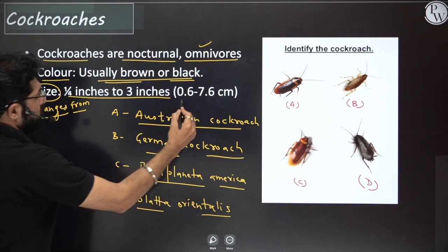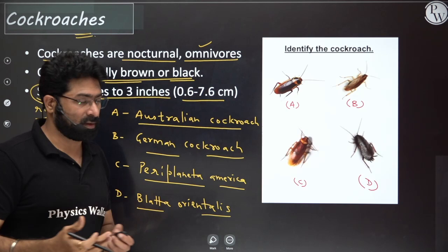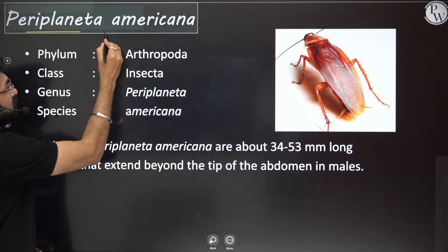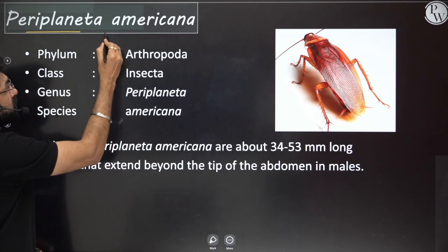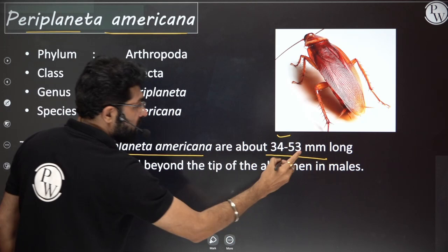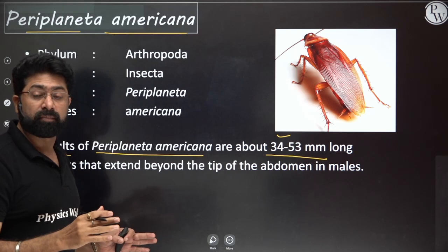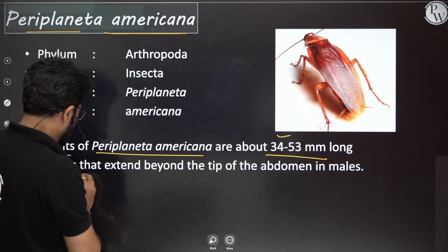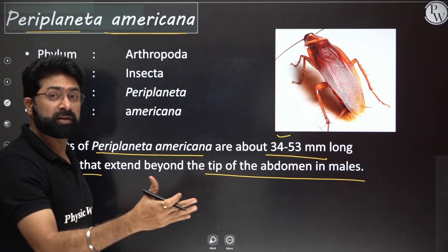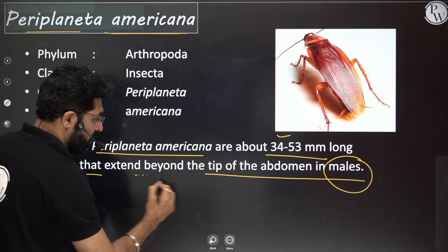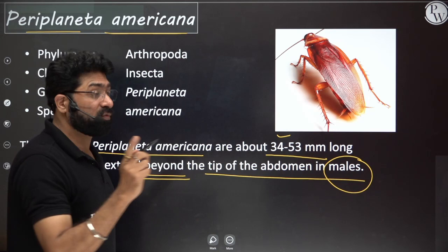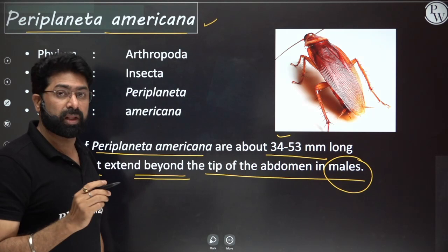Cockroaches are cosmopolitan, found almost everywhere. Let's talk about Periplaneta americana specifically. NCERT has clearly written: adults of Periplaneta americana are about 34 to 53 millimeters long. In Periplaneta americana, to differentiate between male and female — in males the wings are longer and extend beyond the abdomen.